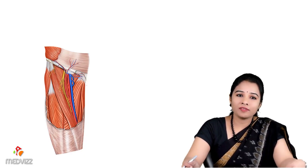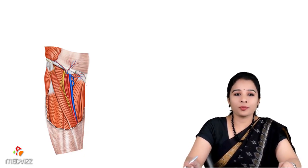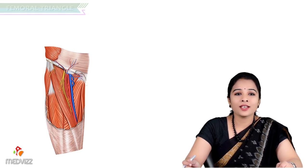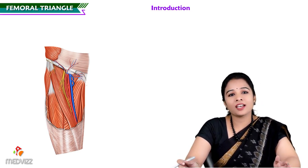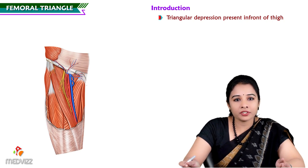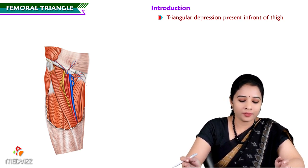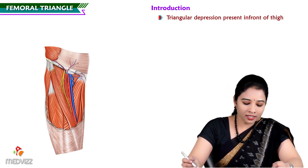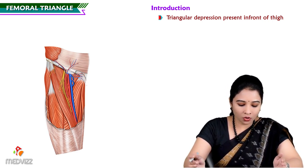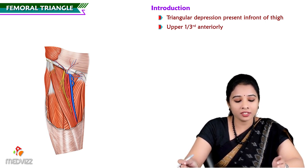Dear students, today we will go ahead with a very interesting and important topic in the lower limb: the femoral triangle. The femoral triangle is a triangular depression present in front of the thigh. If you see the upper one third of the thigh, the triangle present on the medial upper one third anteriorly is the femoral triangle.